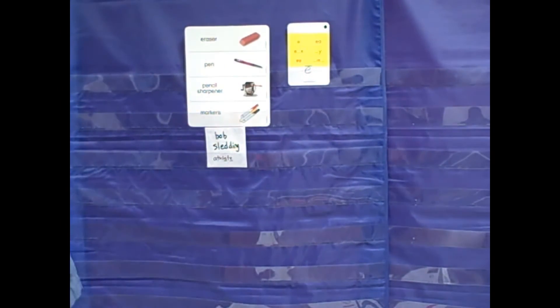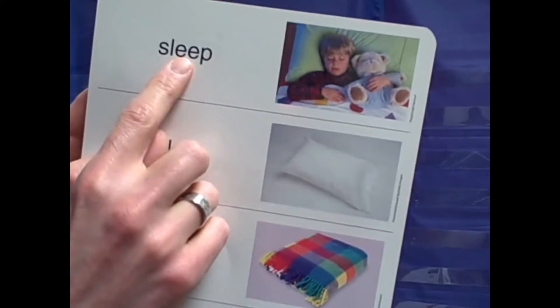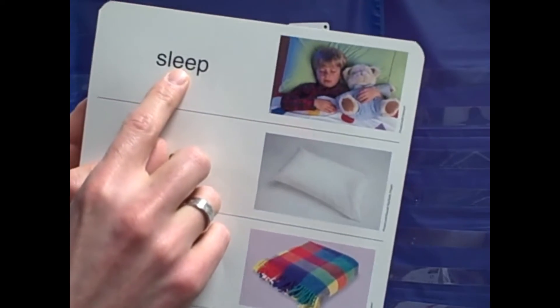The picture I use for helping children read EE is this one, sleep. I show them the picture, we practice the spelling, and then they read the word.